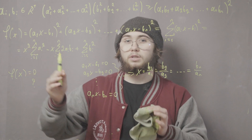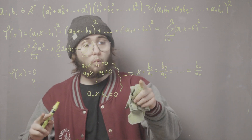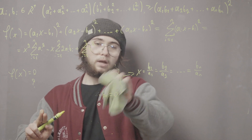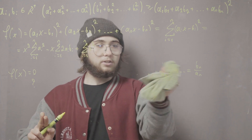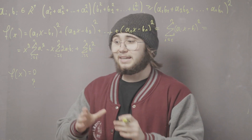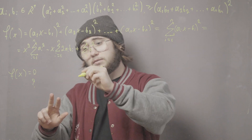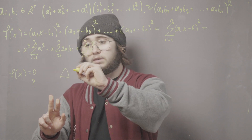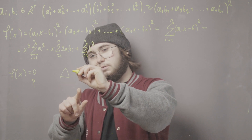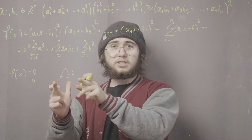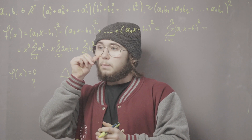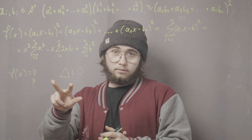Since f(x) is a quadratic equation with at most one real root, the discriminant Δ of f(x) must be less than or equal to zero. Let me denote the coefficient of x² as capital A, the coefficient of x as capital B, and the constant term as capital C.